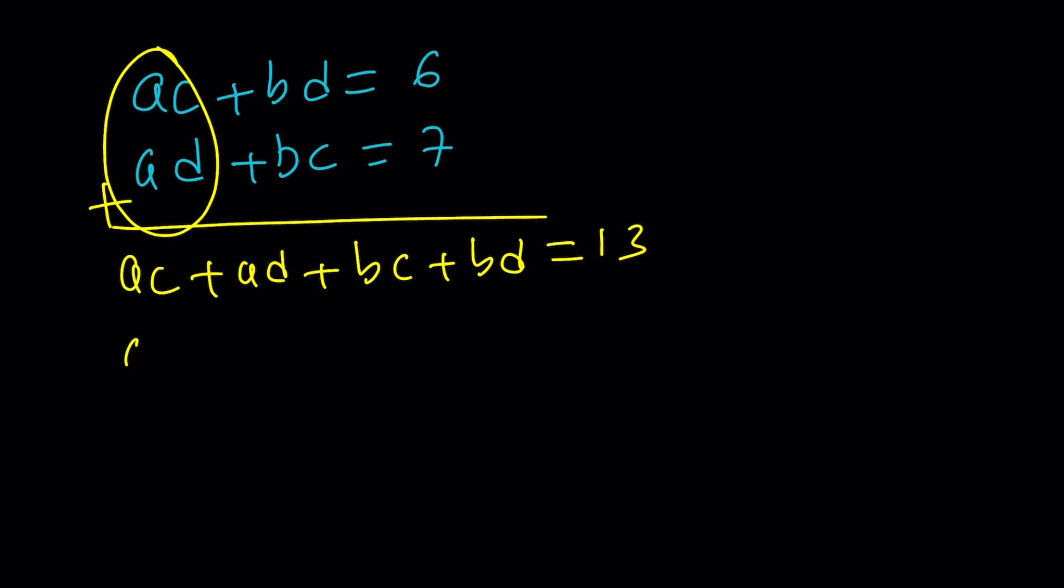So, factor out A, B, and then C + D is a common factor. So, we can go ahead, and I like to write in alphabetical order. So, let's go ahead and put it as (A + B)(C + D).